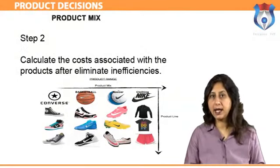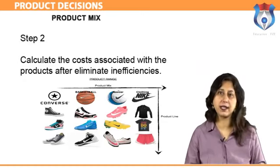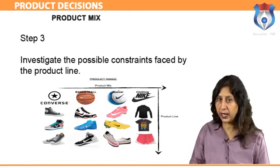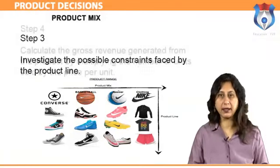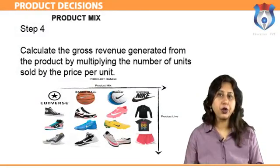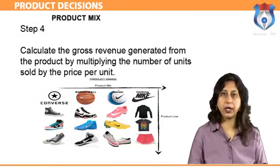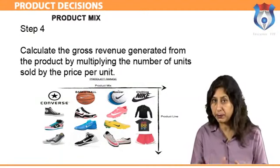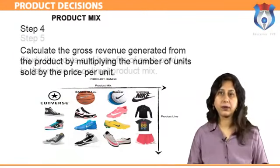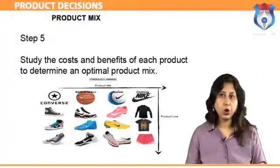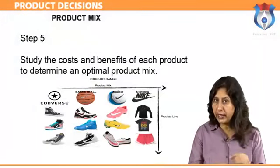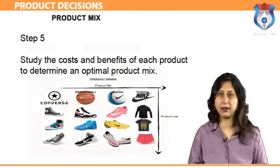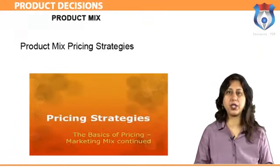Step 2: calculate the costs associated with the products after eliminating inefficiencies. Step 3: investigate the possible constraints faced by the product line. Step 4: calculate the gross revenue generated from the product by multiplying the number of units sold by the price per unit. Step 5: study the costs and benefits of each product to determine an optimal product mix.